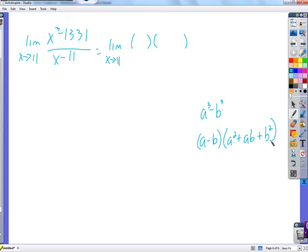So a is x, and b is what we have to figure out. What is b cubed to get 1331? This is 11 cubed. So we have a is x and b is 11, so it's x minus 11.